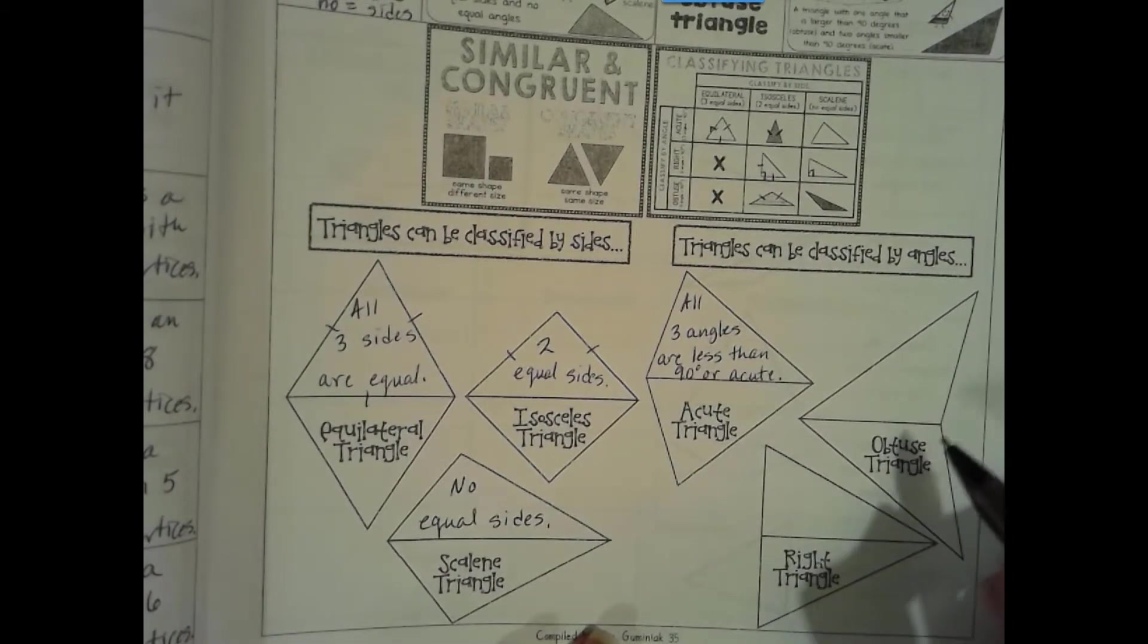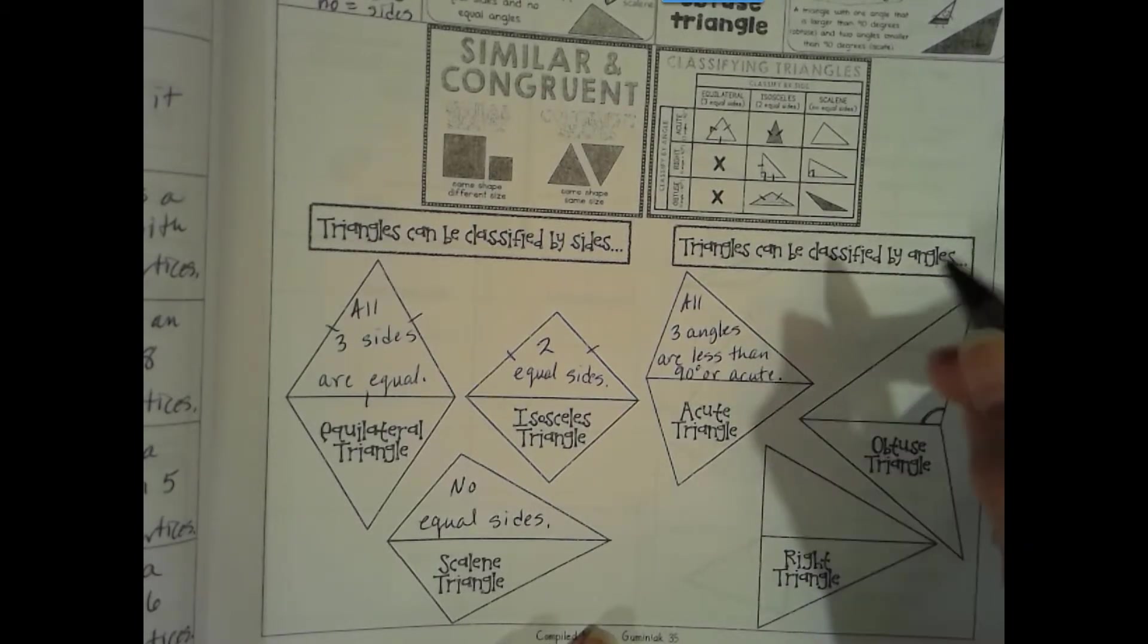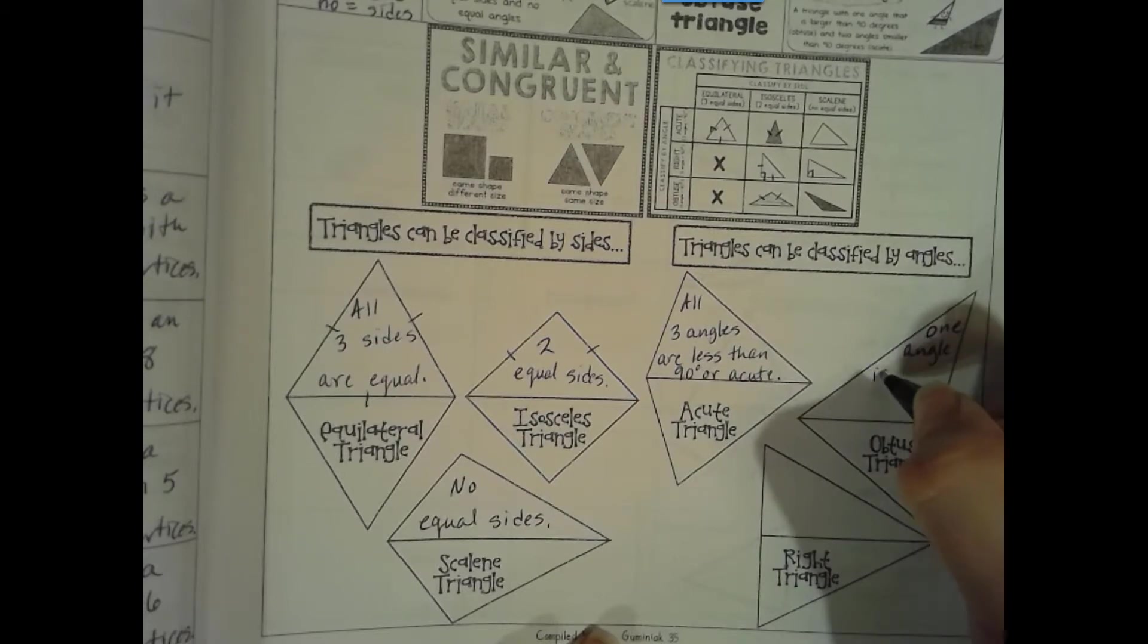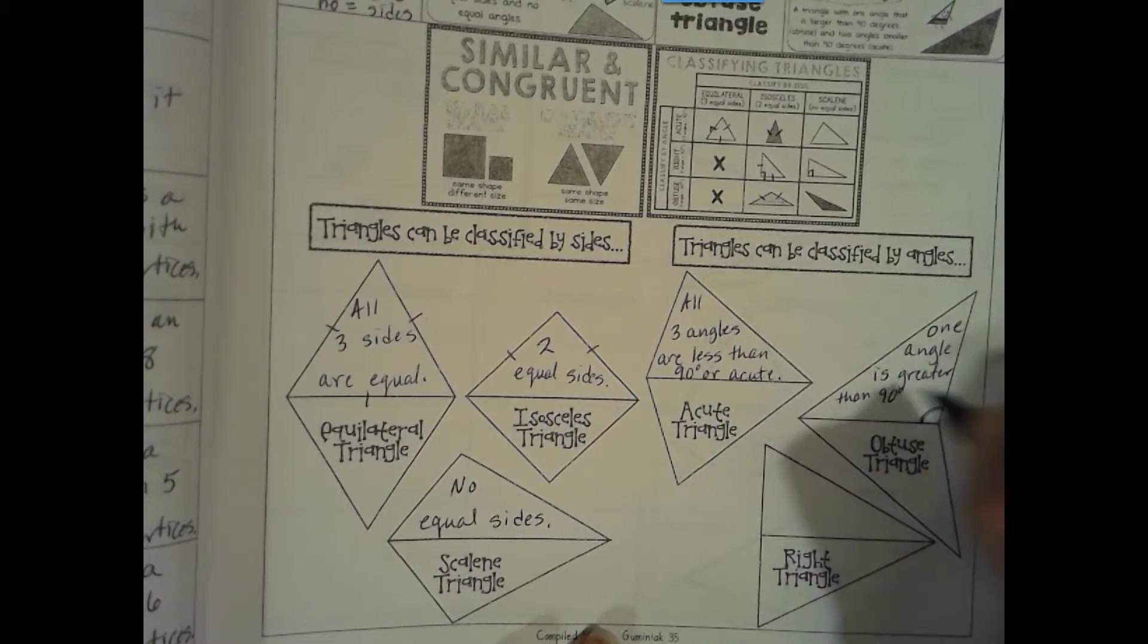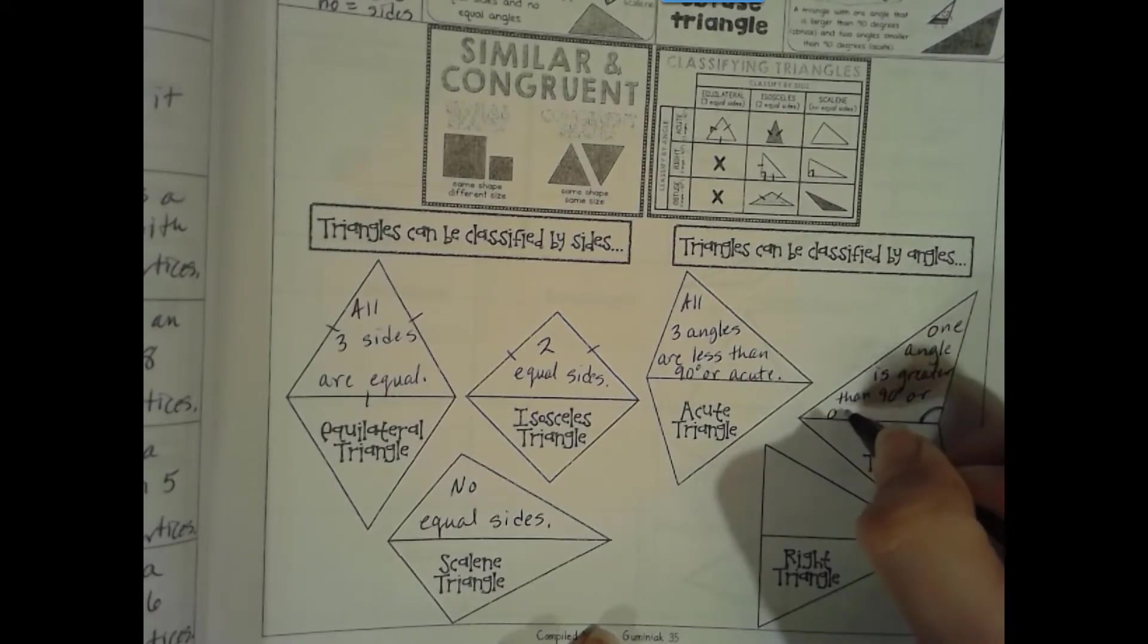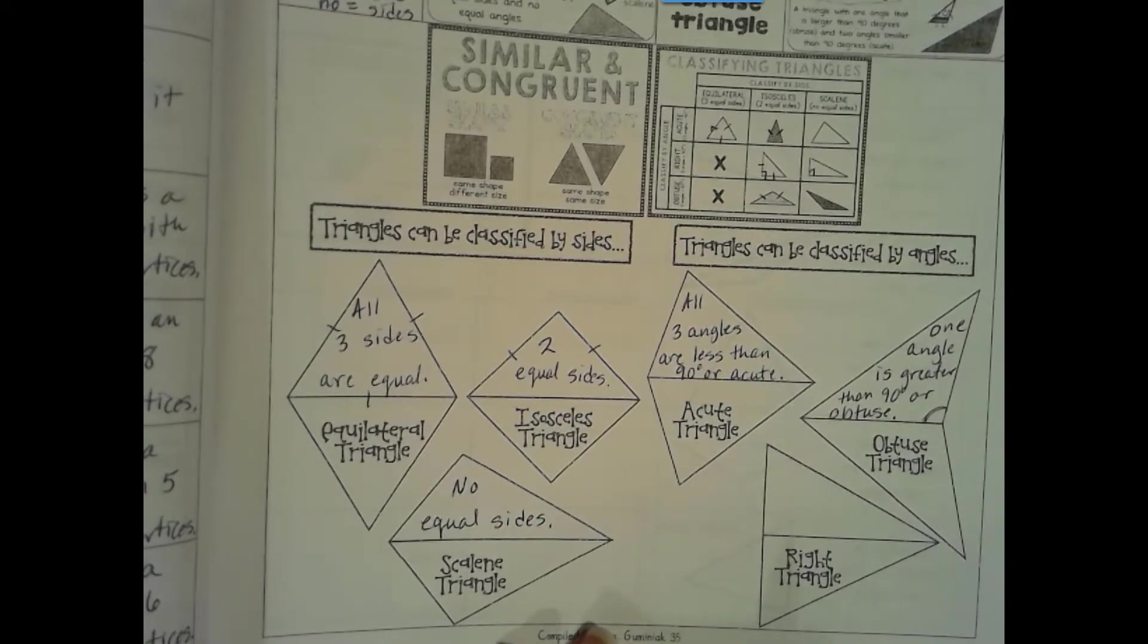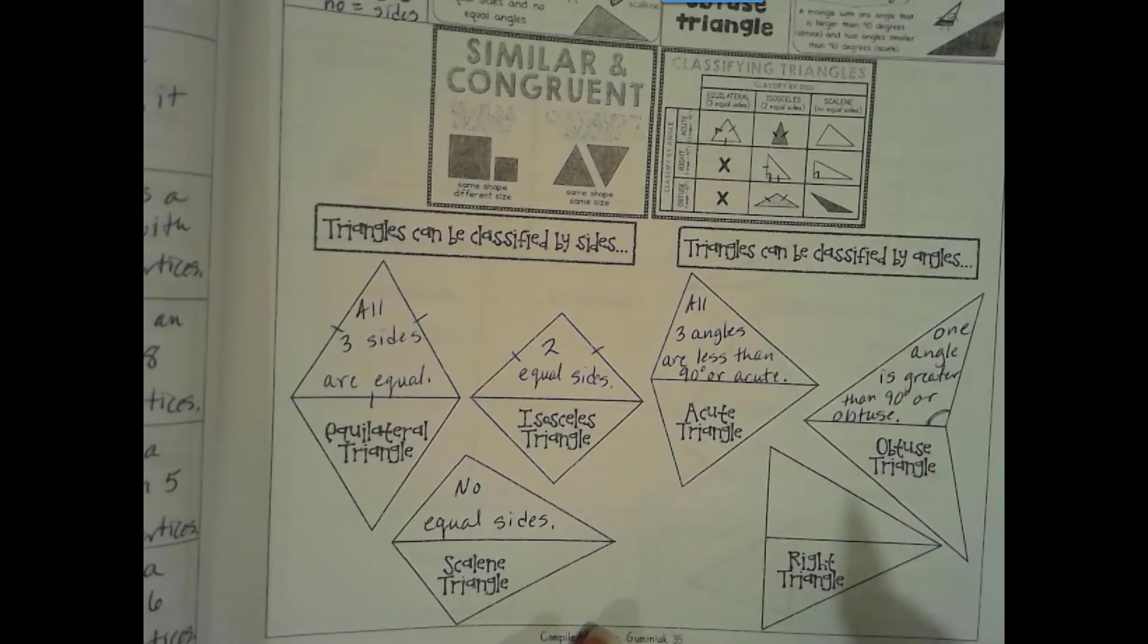To be an obtuse triangle, you just have to look for that one angle. One angle is greater than 90 degrees or obtuse. So we just need one obtuse angle and it's an obtuse triangle.